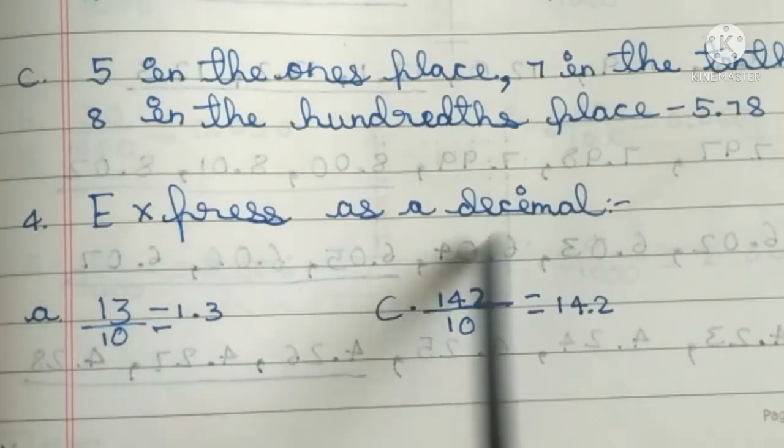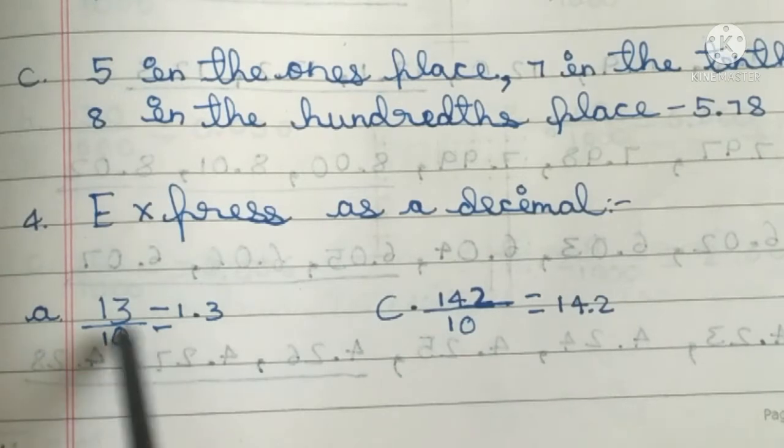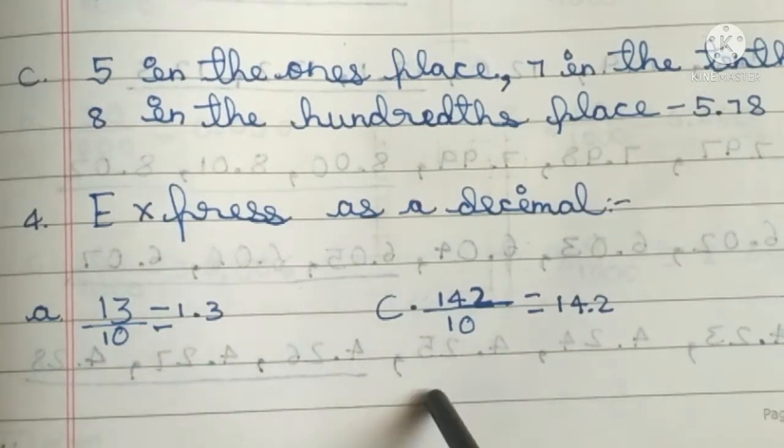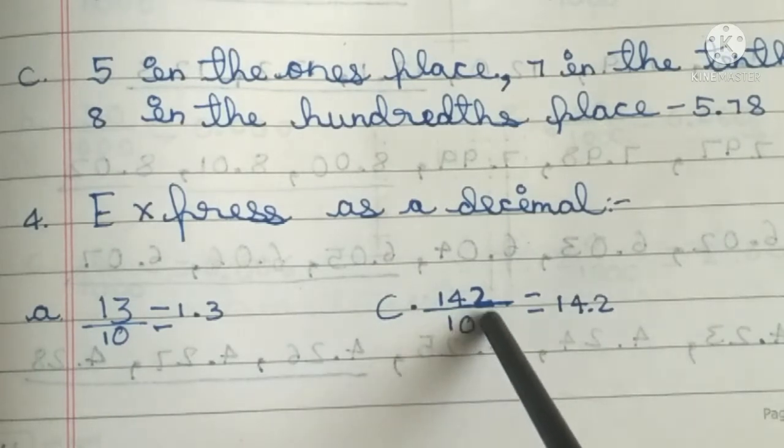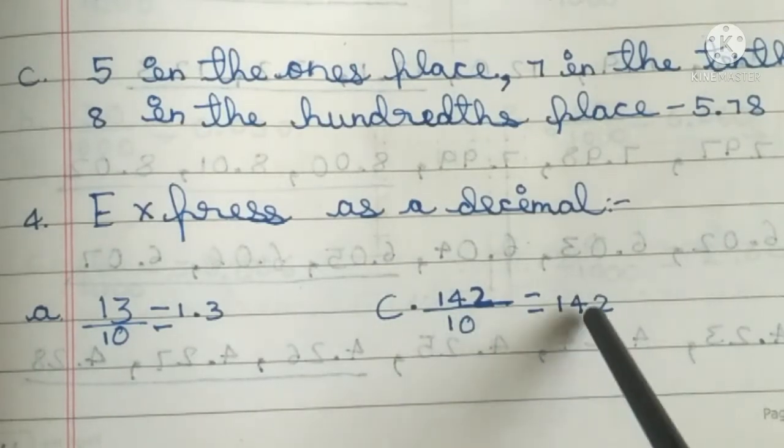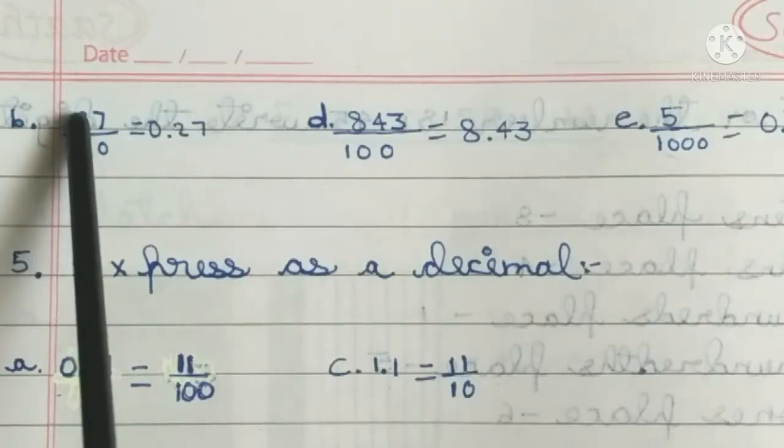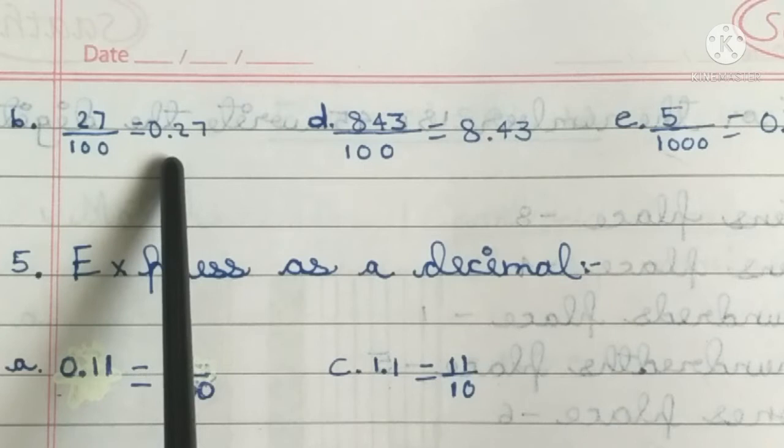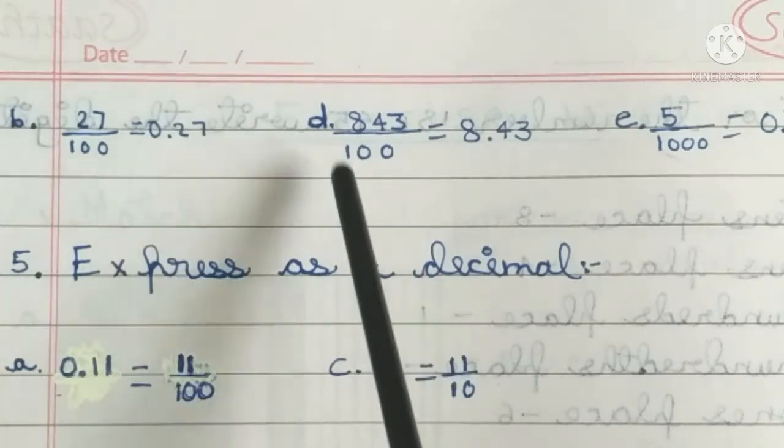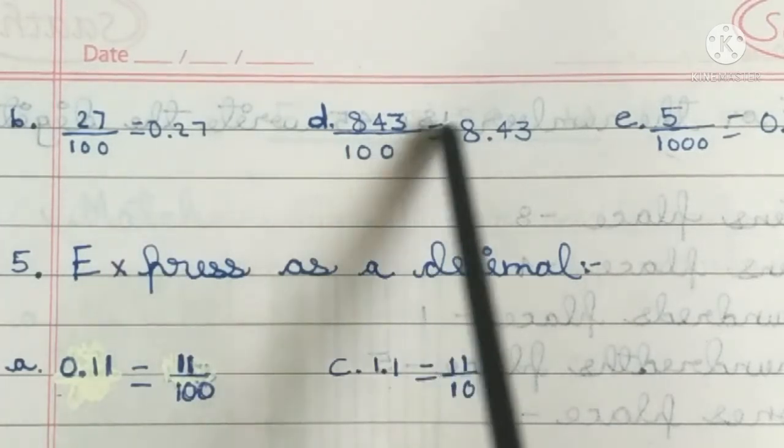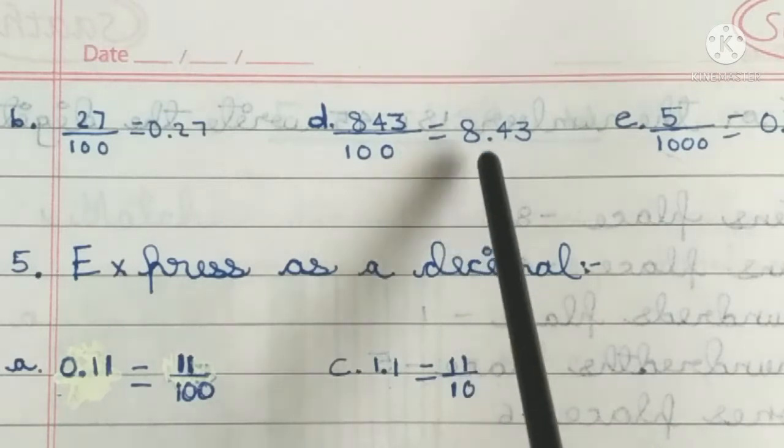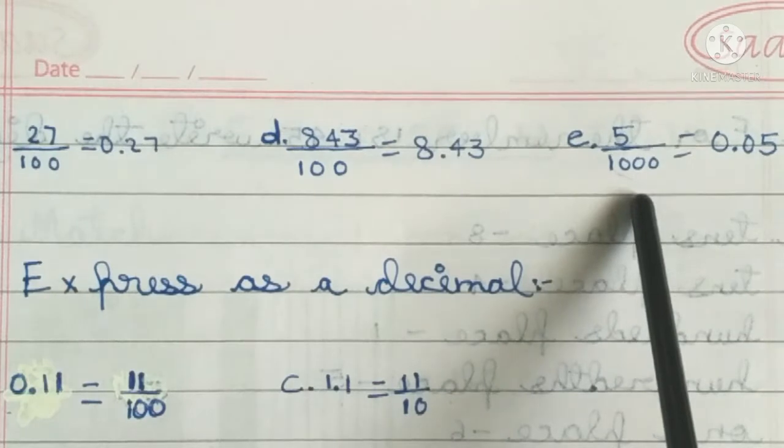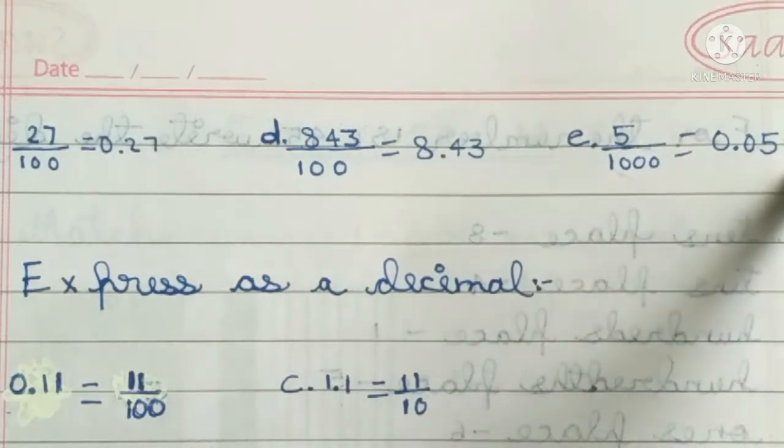Fourth main, express as a decimal: First one, 13 divided by 10 is equal to 1.3. Third one, 142 divided by 10, that is equal to 14.2. Second one, 27 divided by 100 is equal to 0.27. Fourth one, 243 divided by 100, that is equal to 8.43. Fifth one, 5 divided by 1000, that is equal to 0.05.